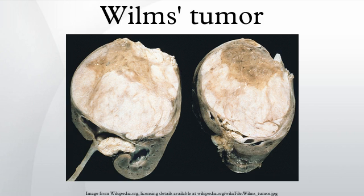Stage 3: For Stage III Wilms Tumor, one or more of the following criteria must be met: unresectable primary tumor, lymph node metastasis, tumor is present at surgical margins, or tumor spillage involving peritoneal surfaces either before or during surgery, or transected tumor thrombus. Stage 4: Stage IV Wilms Tumor is defined as the presence of hematogenous metastases or lymph node metastases outside the abdominopelvic region. Stage 5: Stage V Wilms Tumor is defined as bilateral renal involvement at the time of initial diagnosis.